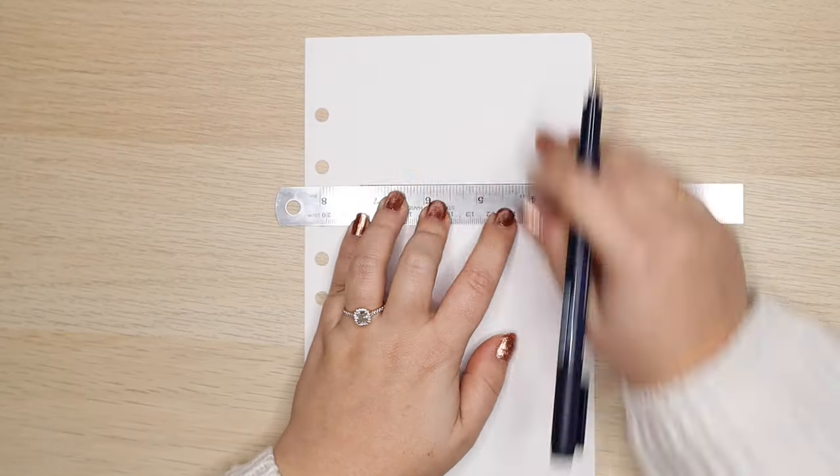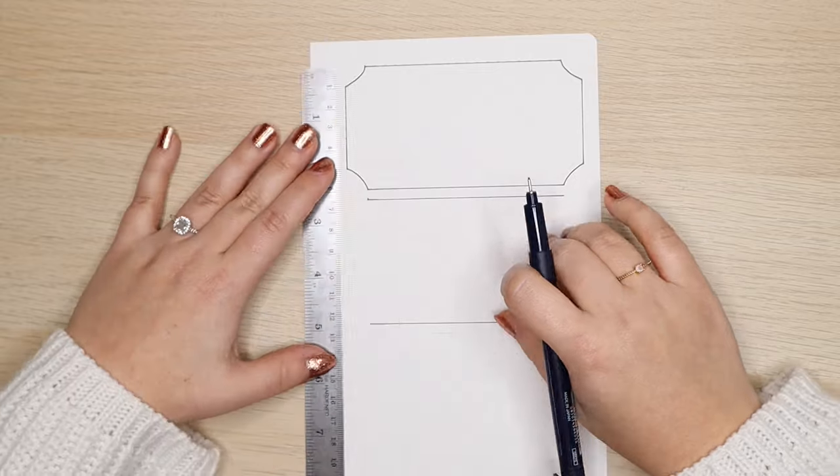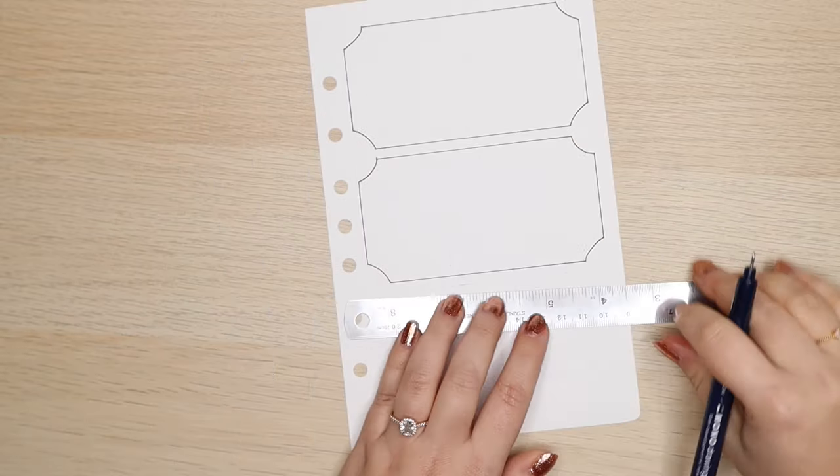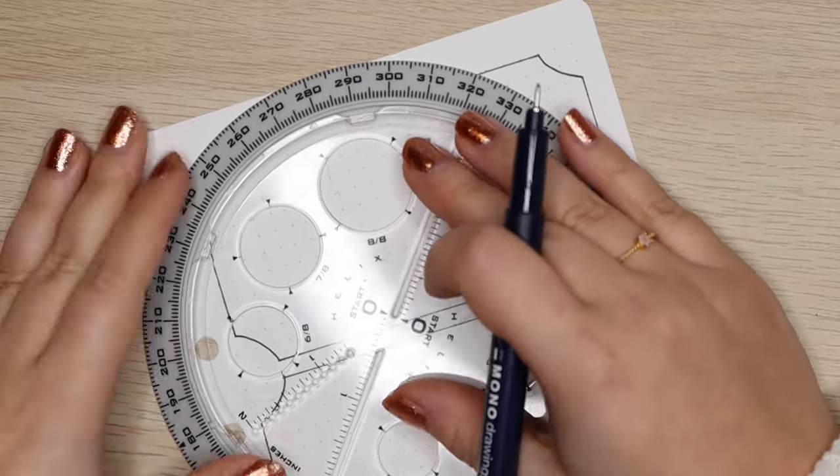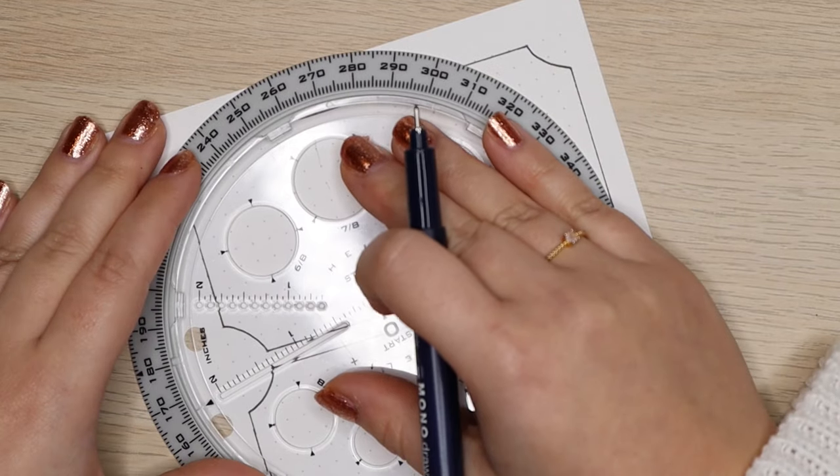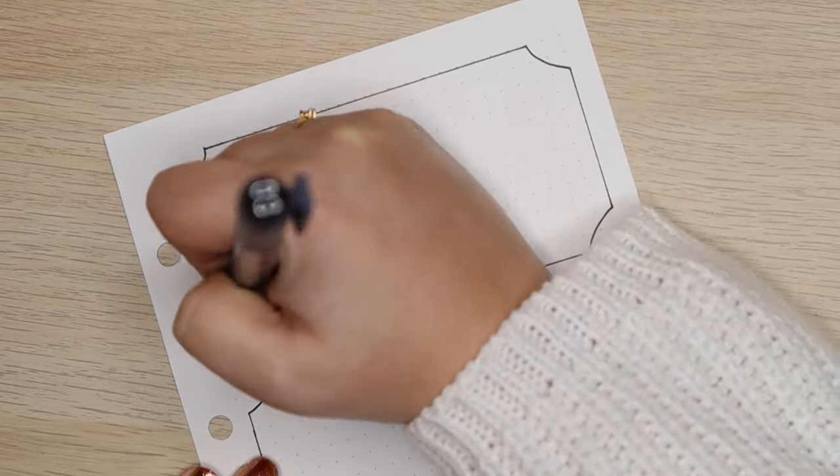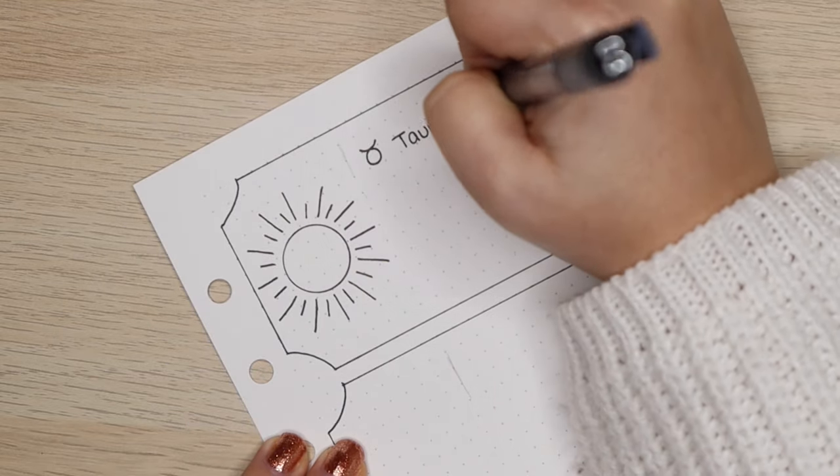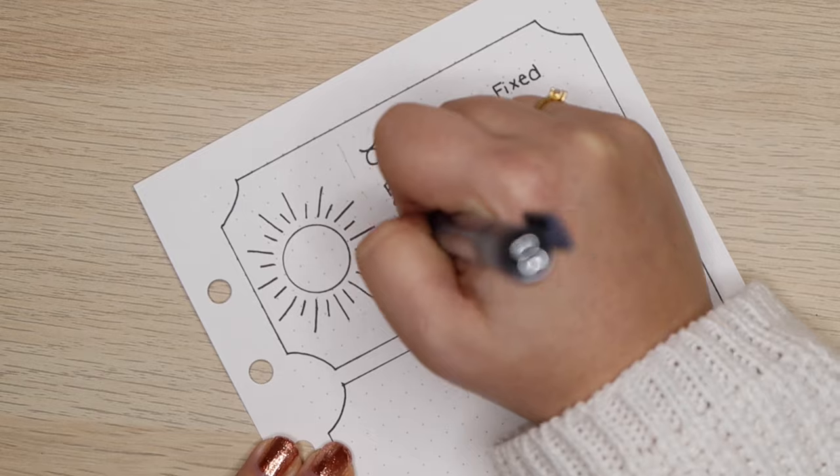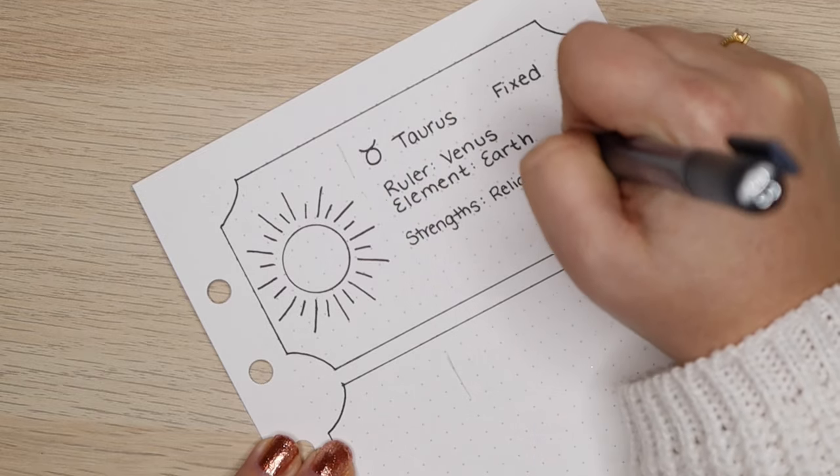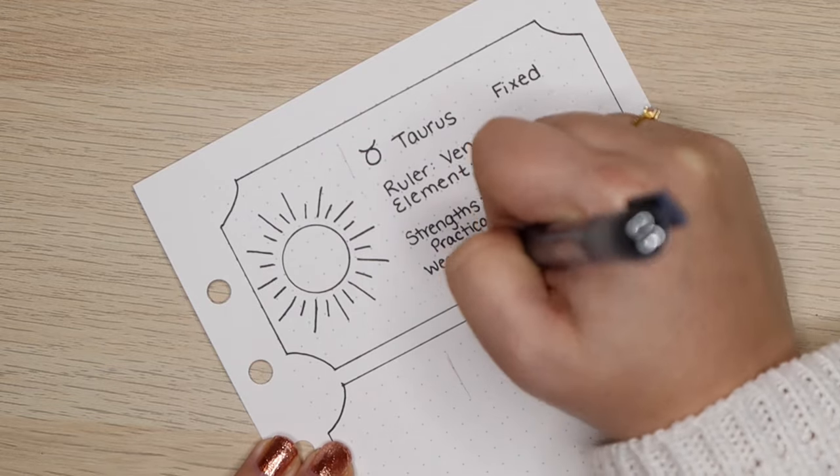This next spread is the three main aspects of your birth chart that most people care about, which is your sun, moon, and rising signs. These three aspects of your birth chart are what truly make up your entire personality. While your sun sign alone can give you a pretty good idea of your personality, it really takes all three of these combined to get the full picture. So for each sign, I'm including pretty much the same information that I included in the zodiac spread. These will be the same for all the sun signs, but they are going to be different for the moon and the rising signs.